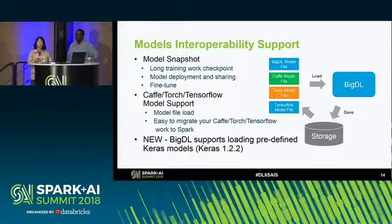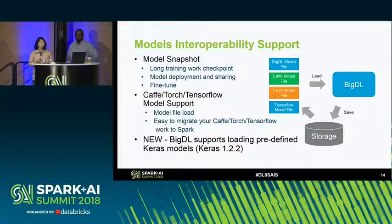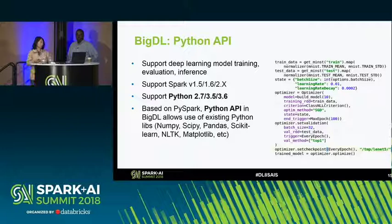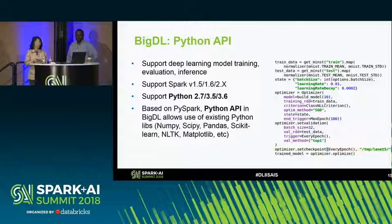BigDL is compatible with other deep learning libraries — it can load Caffe, Torch, TensorFlow, and Keras models into the BigDL environment, enabling use of pre-trained models for fine-tuning or inference in the Spark environment. BigDL was initiated with a Scala API but also provides a Python API, supporting Python 2.7, 3.5, and 3.6. It's easy to use the BigDL Python API alongside other Python libraries to create complex analytics systems.